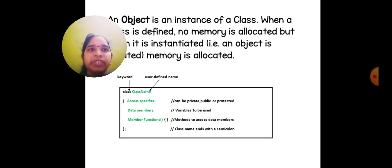Properties are also called attributes in programming language. An object is an instance of a class. When a class is defined, no memory is allocated, but when it is instantiated, that is an object is instantiated, memory is allocated.